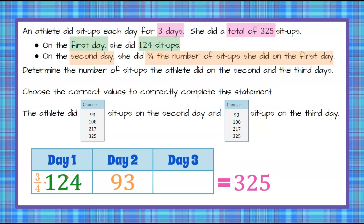You could also do it in reverse: 124 divided by 4 — that fraction bar means divide — then multiply by 3. So on a calculator, to multiply by a fraction, multiply by the numerator and divide by the denominator; the order doesn't matter. Either way, you get 93. So we know day one she did 124 sit-ups, and day two she did 93 sit-ups.